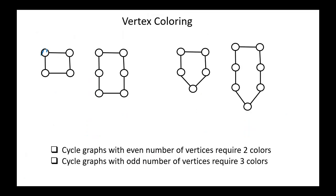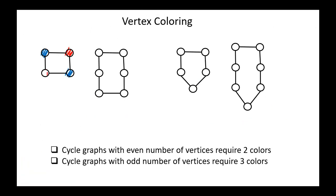We can color this regular graph as follows: blue, blue, red, red. If we have a cycle graph, we can color it blue, blue, blue, and the other vertices red. So we only need two colors.